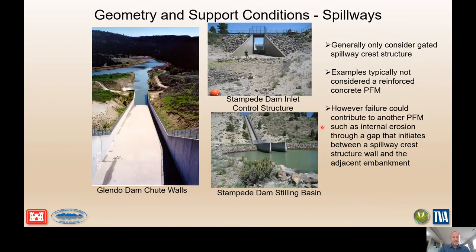Generally when we're talking about reinforced concrete failure mechanisms, we're talking about gated spillway structures whose failure would result in an uncontrolled release of the reservoir. However, there are situations where it's not a gated structure and the failure could be a precursor to another failure mechanism — for example, during an earthquake, losing a spillway sidewall at the toe of a dam could increase exit gradients and become an initiator for internal erosion. So there are other failure mechanisms that risk teams need to consider.